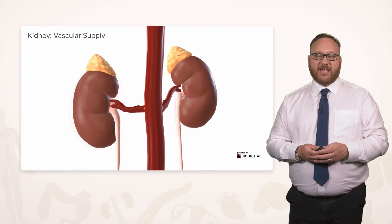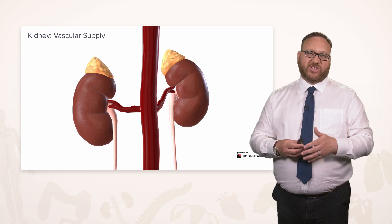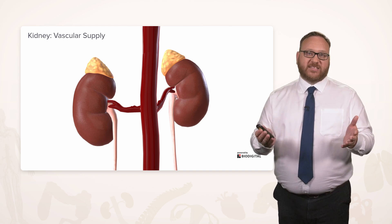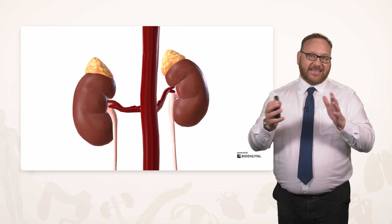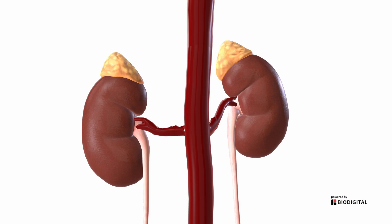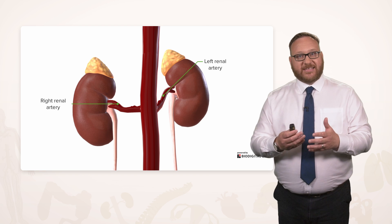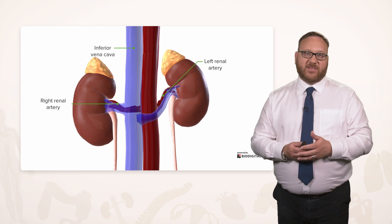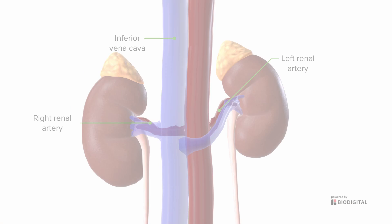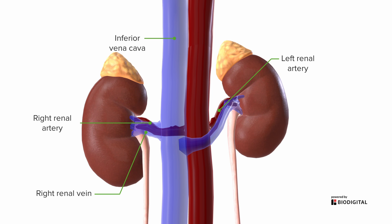Here we can see the two kidneys in situ, positioned lateral to the aorta. We can see the ureter leaving through the renal sinus and through the renal hilum. Passing into each kidney we can see the two renal arteries — the left renal artery passing to the left kidney and the right renal artery passing towards the right kidney. Sitting next to the aorta and anterior to these arterial structures, we find the inferior vena cava. Coming away from each kidney, we have the right renal vein and the left renal vein, both sitting anterior to the arteries.